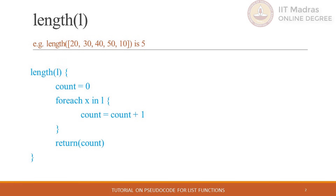Here we will iterate over the list L using a new operator called for-each. It will go through the entire list element by element and increment the count variable. If we pass an empty list as a parameter then it will return zero, because the for-each block will not execute at all. The functionality of this for-each operator is similar to the iterator logic we use over a pile of cards or rows of a table.